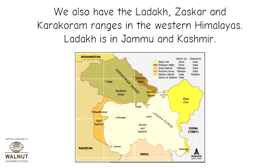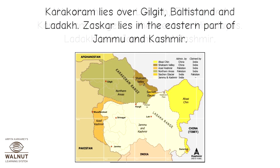Ladakh is in Jammu and Kashmir. Karakoram lies over Gilgit, Baltistan, and Ladakh. Zaskar lies in the eastern part of Jammu and Kashmir.